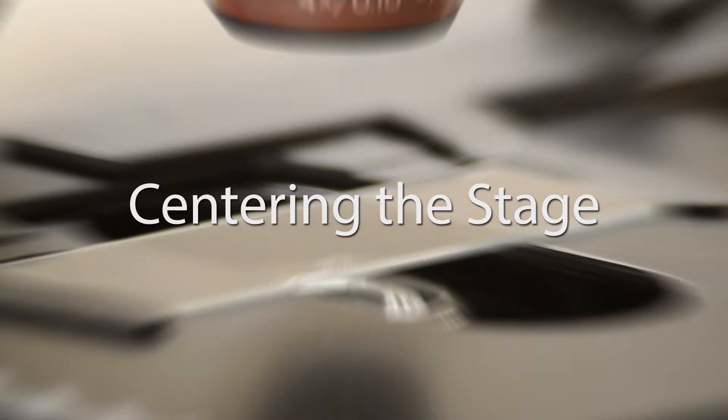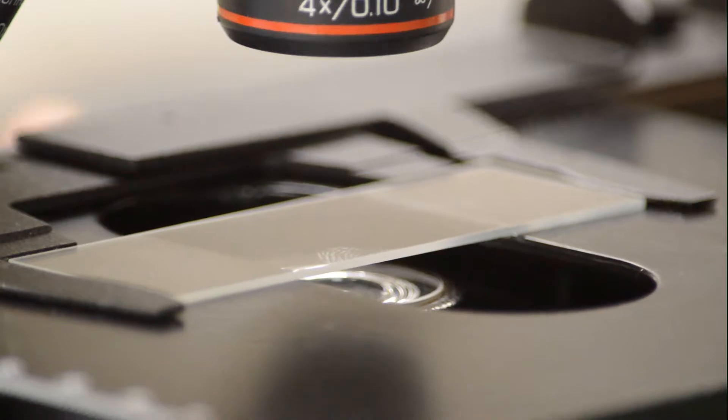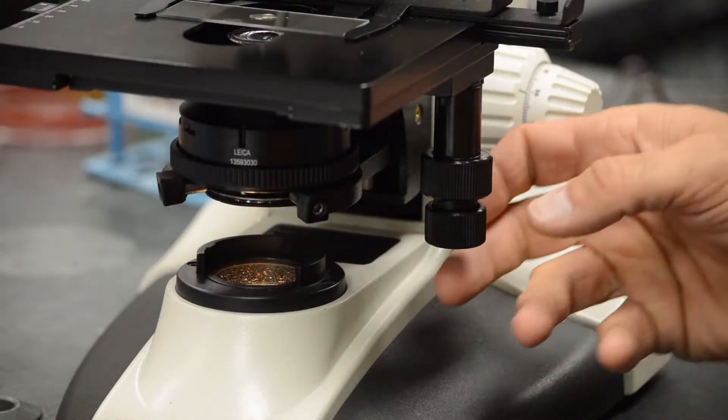This video will look at several different parts of using the microscope. The first step is to place the slide on the stage, and once you have the slide on the stage it becomes necessary to be able to center the slide so that you can view. There are two knobs on the side of the stage.